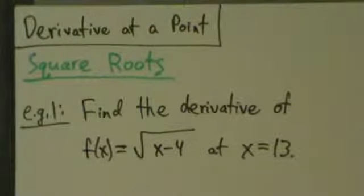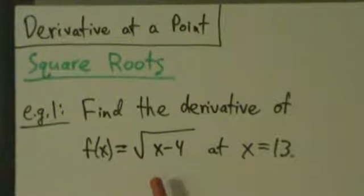All right, let's go ahead and start some examples with finding derivatives of functions that have square roots in them. So here, example 1, find the derivative of f of x equals the square root of x minus 4 at x equals 13.